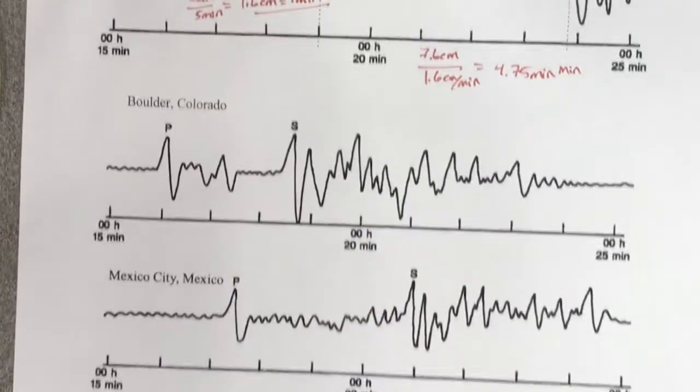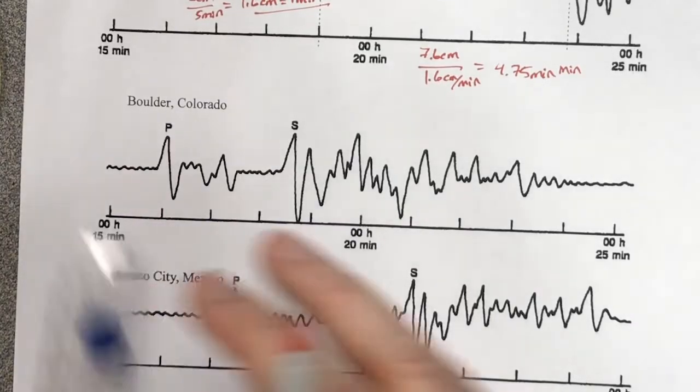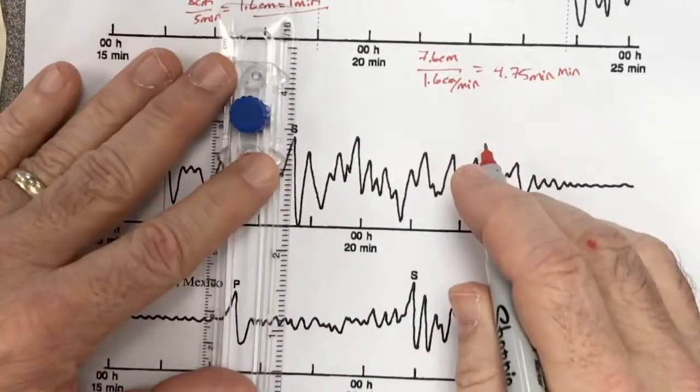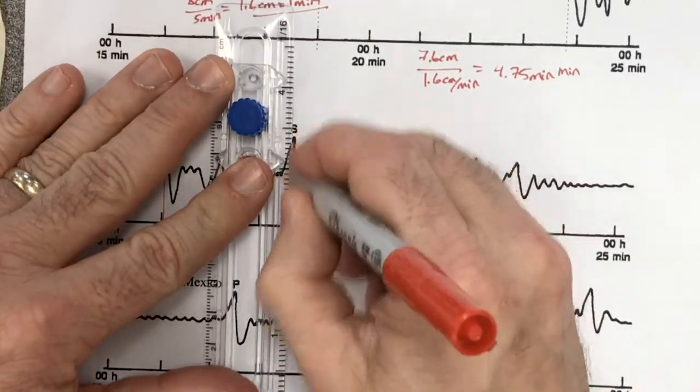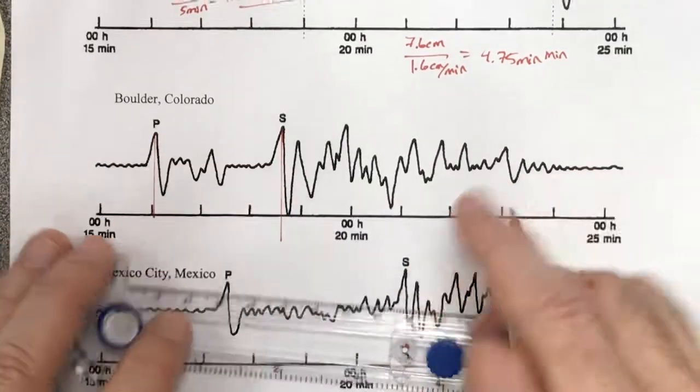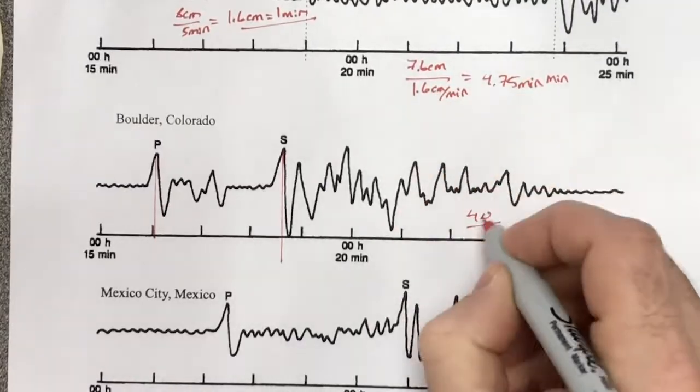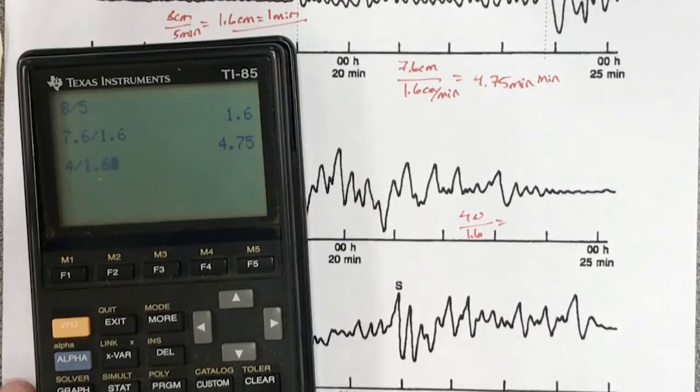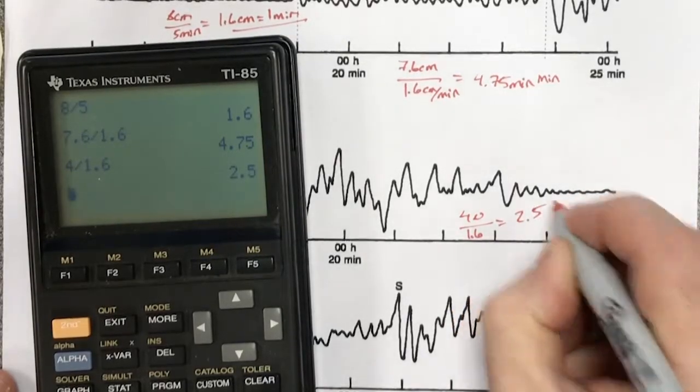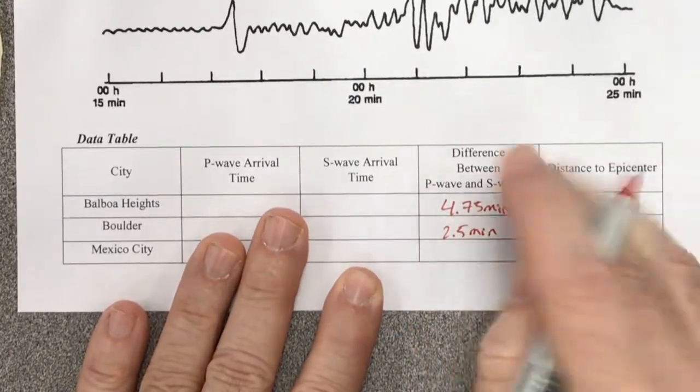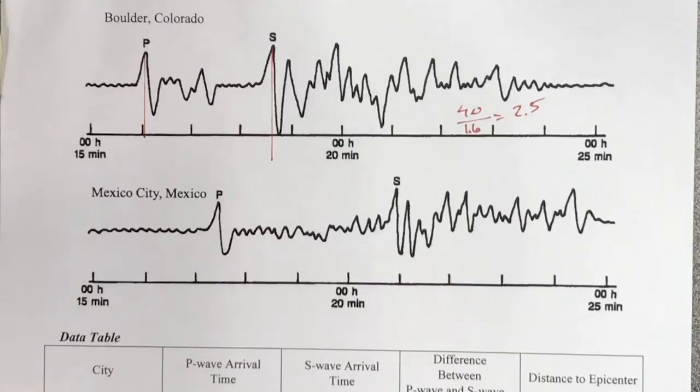I'm going to repeat that process for Boulder and for Mexico City. So when I measure Boulder, I'm going to line this up. I'm going to get my ruler, P and S. And I'm going to measure the distance here. The distance between here and here is 4 centimeters. I'm going to divide by 1.6. Calculator, 4 divided by 1.6 gives me 2.5. So two and a half minutes. I'm going to write that down here. I'm going fast, but when you do this in class, you're going to be fine.